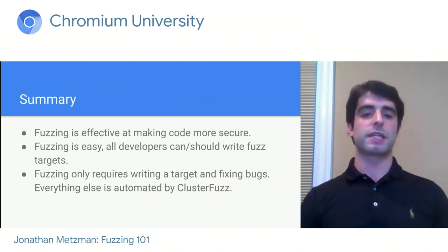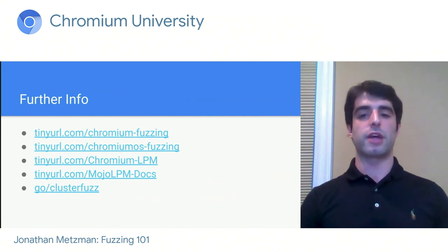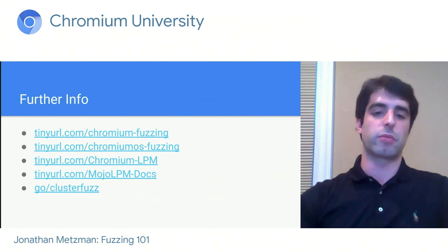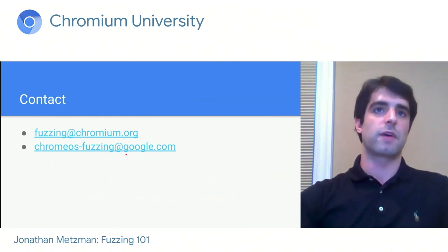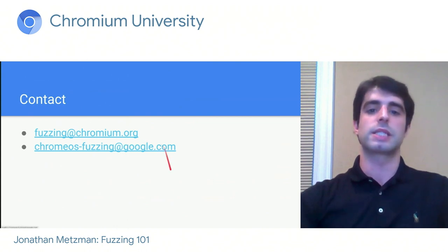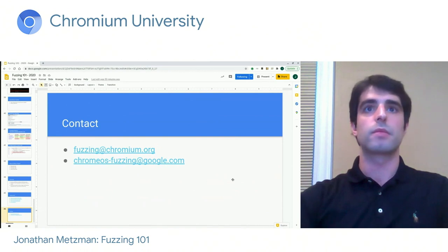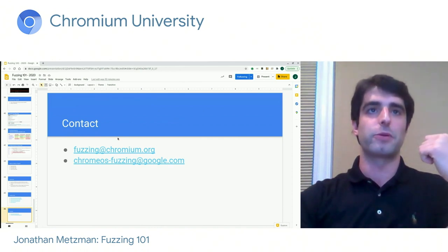To summarize: fuzzing is an effective technique for making code more secure. Fuzzing is easy and all developers can and should write fuzz targets. Fuzzing in Chromium only requires writing a target and fixing bugs — everything else is automated by ClusterFuzz. If you want more info, check out the documentation linked on this slide. You can also reach out via the mailing lists for questions about fuzzing for Chromium and Chromium OS. Thank you, and I hope you fuzz your code in Chromium.